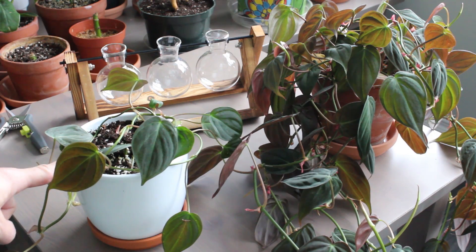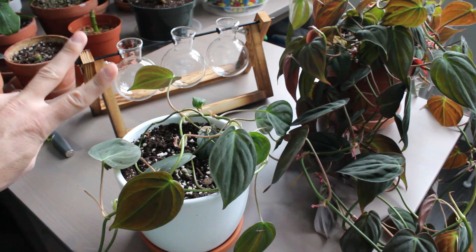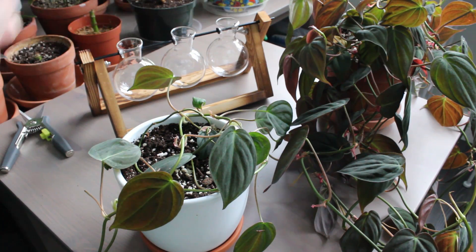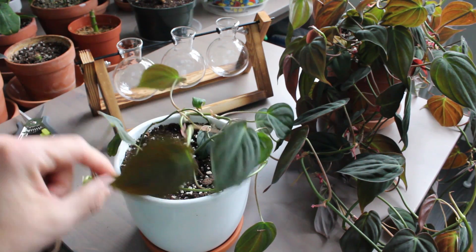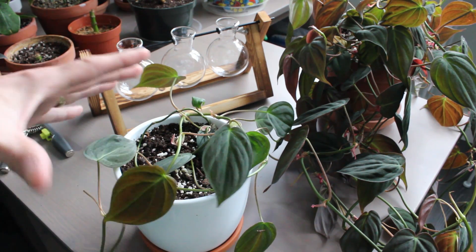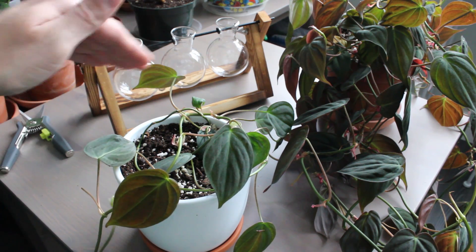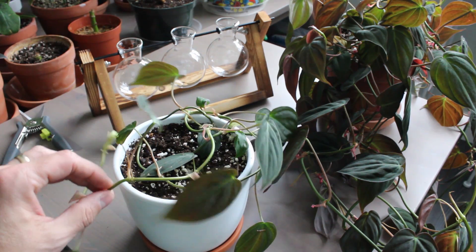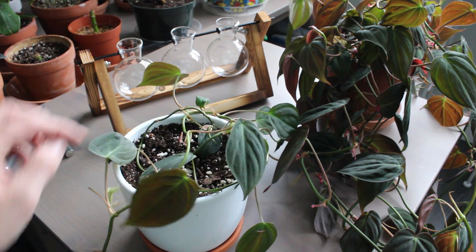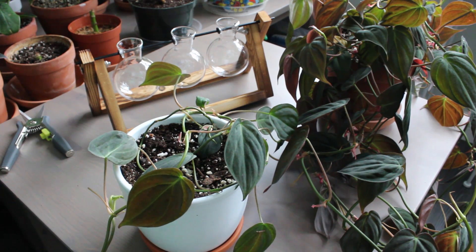I'm going to be propagating these today. There's actually two things that I want to do today. One is propagate this philodendron micans. But this one here is just two separate cuttings and I want the overall plant to be a little bit thicker in the top and then cascade down. So what I did is I kind of coiled it up around the top here.